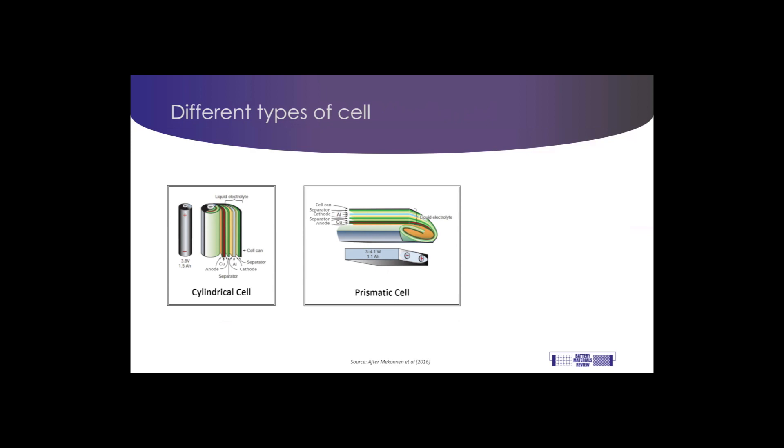The third type of cell commonly used in EVs is the pouch cell. This is used in electric vehicles like the Jaguar I-Pace and the Hyundai Kona, and will be a key component of General Motors' forthcoming Ultium battery architecture.